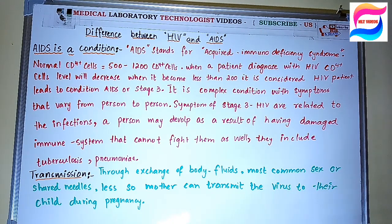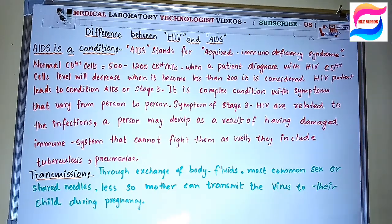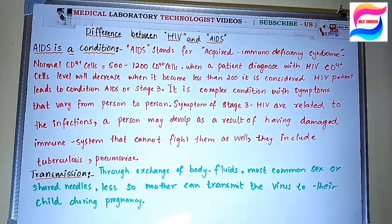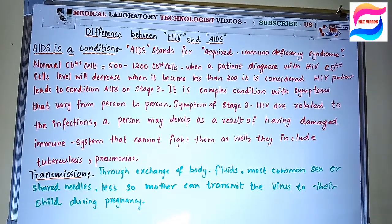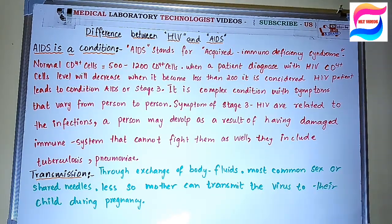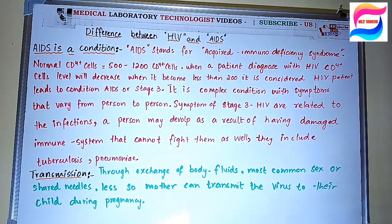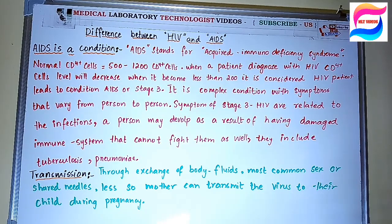HIV targets the T cells of the body and specifically the CD4 cells. When a patient is diagnosed with HIV, we monitor the CD4 level to observe the disease's progress. In a person without HIV, there are normally 500 to 1,200 CD4 cells. When a patient is diagnosed with HIV, their CD4 level will decrease. When CD4 cells fall below 200, the HIV patient is progressing to the condition called AIDS, or stage 3 HIV.